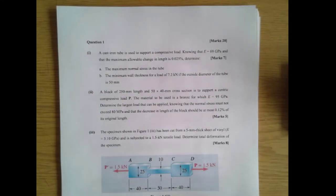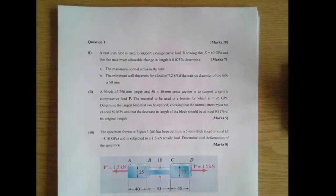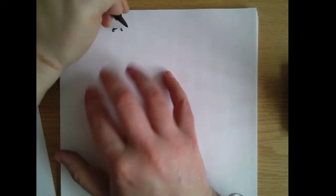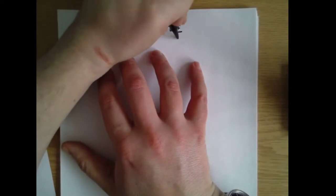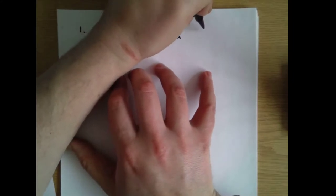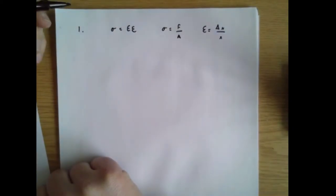This is question one from the 2020 solid mechanics exam. This is largely a question about stress and strain. Stress is Young's modulus times strain. Stress is defined as force over area, and strain is change in length divided by length. Those things are going to end up being useful.